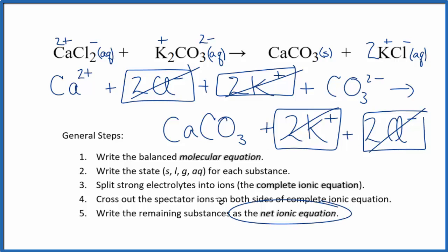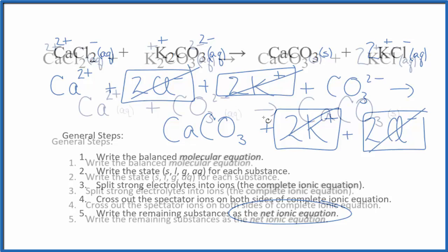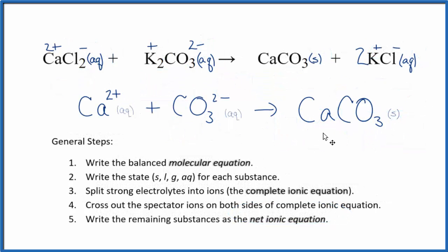I'll clean this up and add the states. We'll have our net ionic equation. So this is the balanced net ionic equation for calcium chloride plus potassium carbonate.